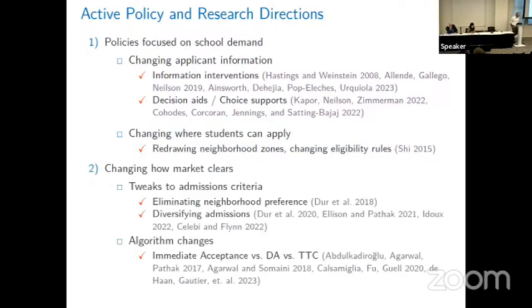The second set of active research areas involves changing how the market clears — tweaks to admissions criteria like the elimination of certain priorities, like the demise of walk zones in Boston, or efforts ongoing across the United States on diversifying admissions to schools. This includes studies of how Chicago developed a race-neutral form of affirmative action, and work that Oguzan has done contrasting priority-based boosts with quota and reserve systems. And then finally, algorithm changes — many people here have studied the consequences of different ways of clearing the market.